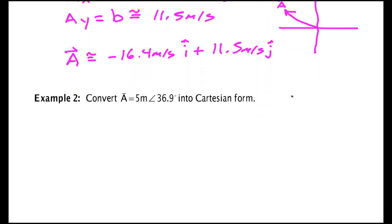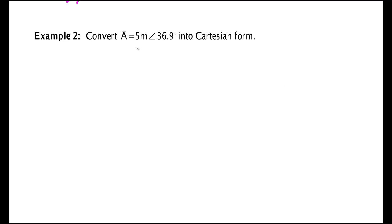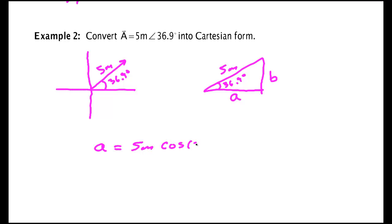Let's try another one. This one says convert the following: 5 meters at 36.9 degrees. Alright. So I have something that's about 5 meters, 36.9 degrees. So we're looking at a triangle like this. I'm looking for A and B again. A is 5 meters at the cosine of 36.9 degrees. And if I plug all that in, I get 4.00 meters.